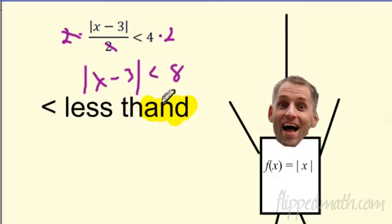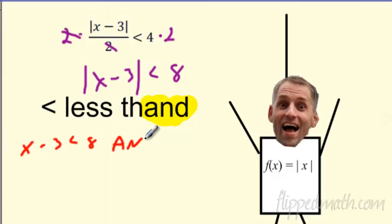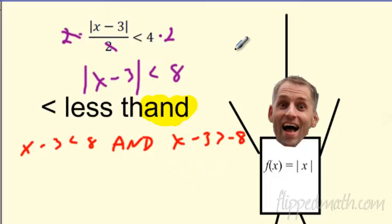So there it is. Less than — I'm putting the and in there. It's going to be an and. So when I split these up, I'm going to split these up. When I'm just down to the absolute value, I'm going to split this up into x minus three is less than eight. And x minus three is — flip the sign and make it a negative. So I've got two possibilities. They're connected with an and, so they've got the compound inequality connecting them together.